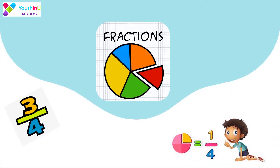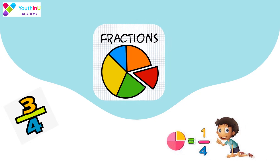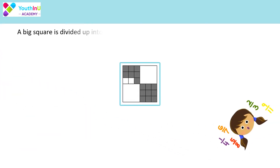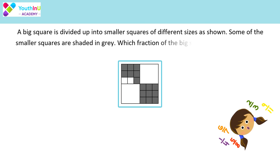Hello. Today's question is about fractions. A big square is divided up into smaller squares of different sizes as shown. Some of the smaller squares are shaded in grey. Which fraction of the big square is shaded in grey?